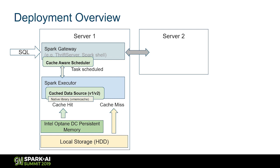For deployment, when a user sends SQL through the Spark gateway like Spark Thrift Server, the add-on OAP package runs on top of Spark. The cache-aware scheduler determines which executor already has the data cached, and sends the task based on locality. The executor checks whether the data is already cached — if not, it fetches from local or remote cloud storage. On a cache hit, it retrieves data from Optane DC Persistent Memory through the native layer. From the user side, there is no change to the original SQL.